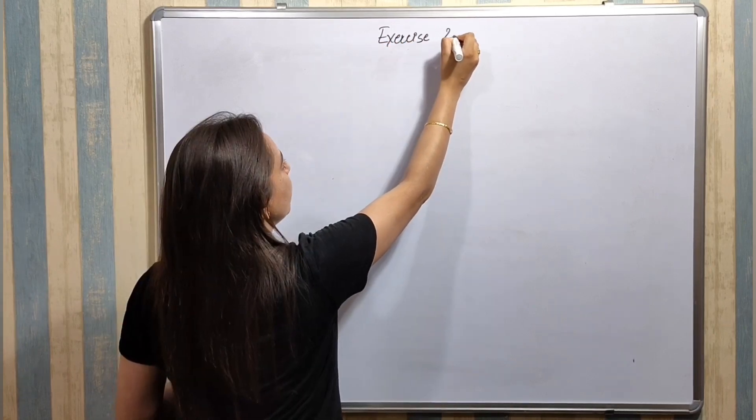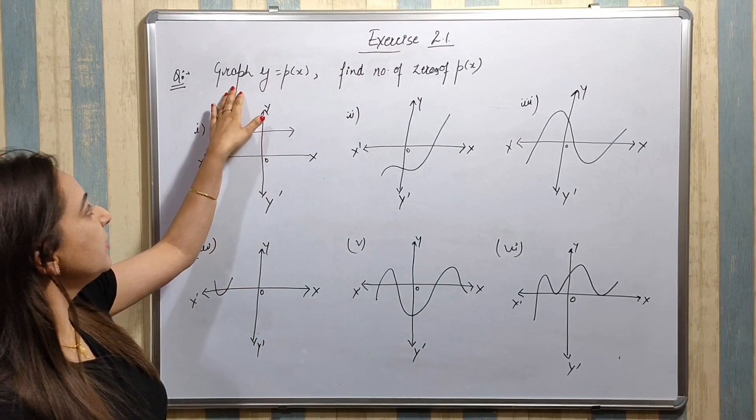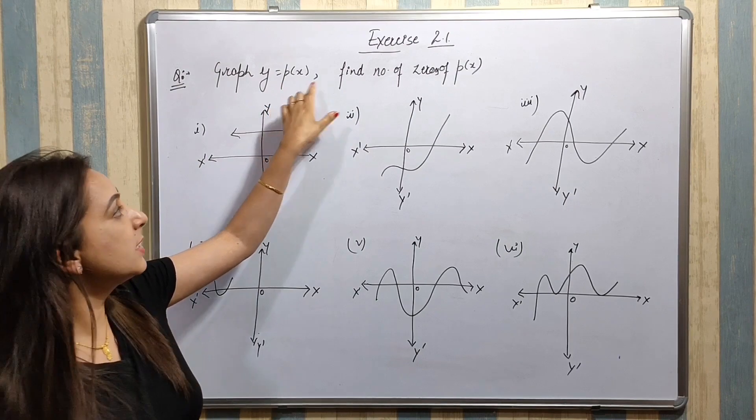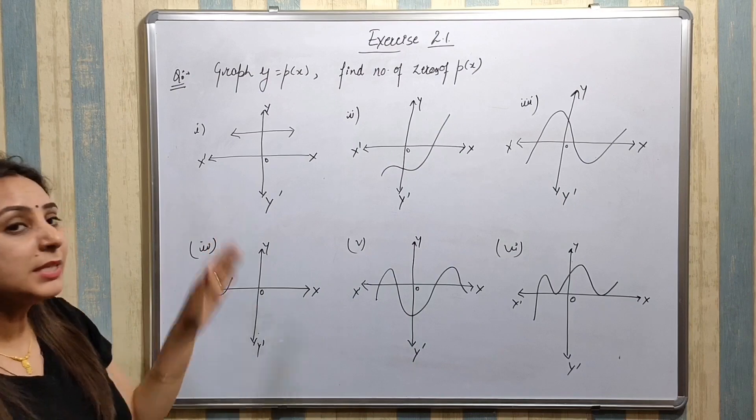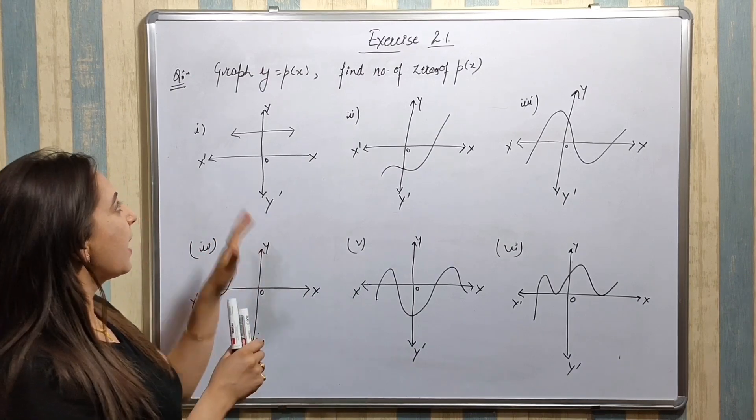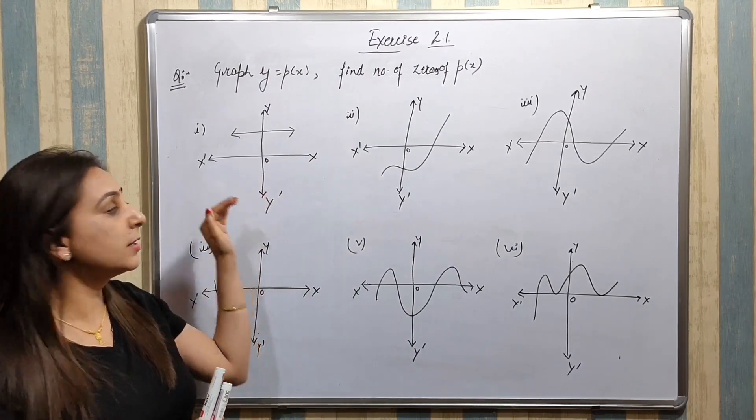Exercise 2.1 question is: graph diya hai y is equals to p of x, find number of zeros of p of x. Number of zeros kaise nikaalenge hai? It means x-axis me y is equals to p of x graph kitni time intersect kar raha x-axis pe.